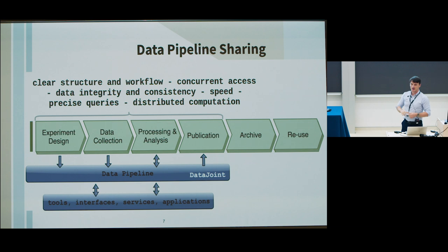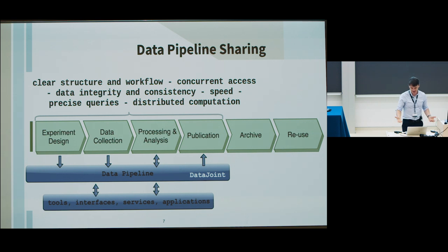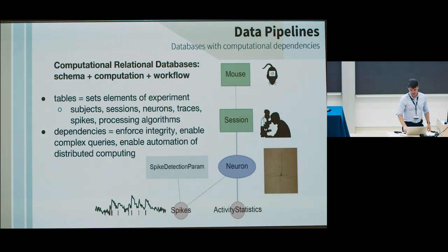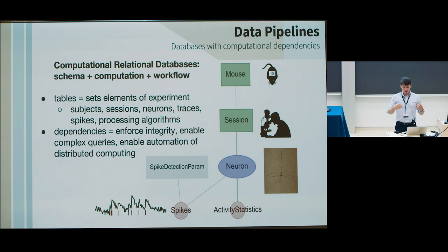For that, we have a framework called DataJoint that supports data pipelines. It is a general tool for creating shared computational data pipelines — quite general, but we use it for neuroscience data pipelines. To DataJoint, you can connect many interfaces and applications. We work with computational relational databases, where we combine a schema — basically rules of data integrity — with computation as part of the model and workflow.